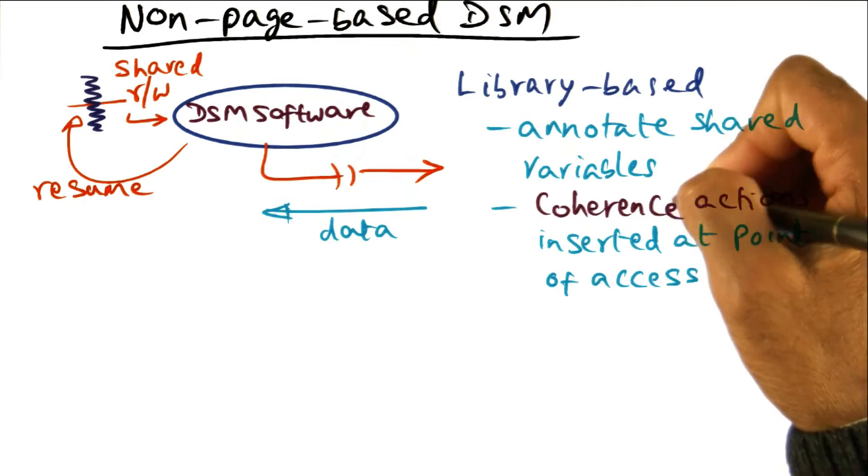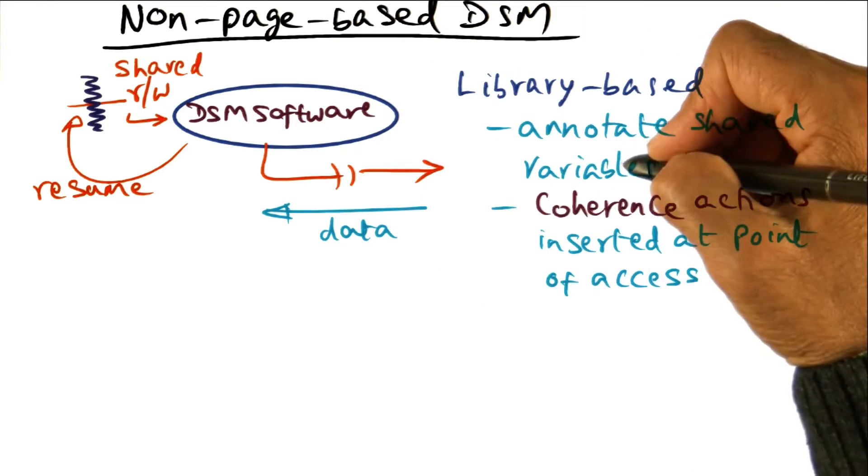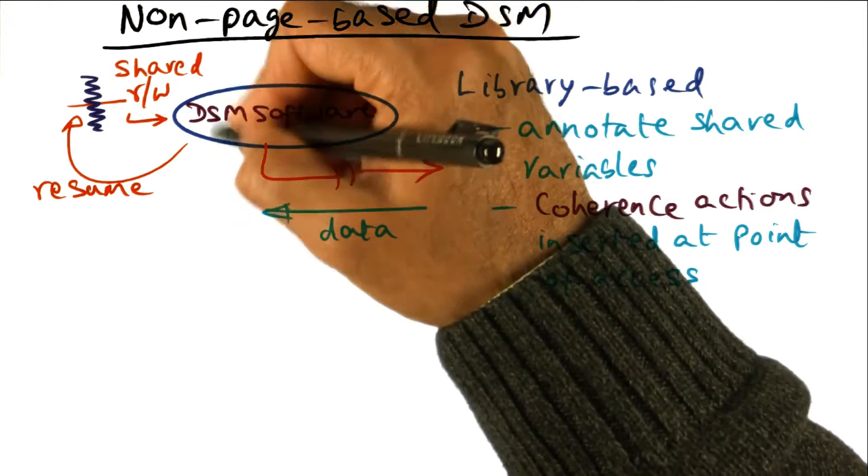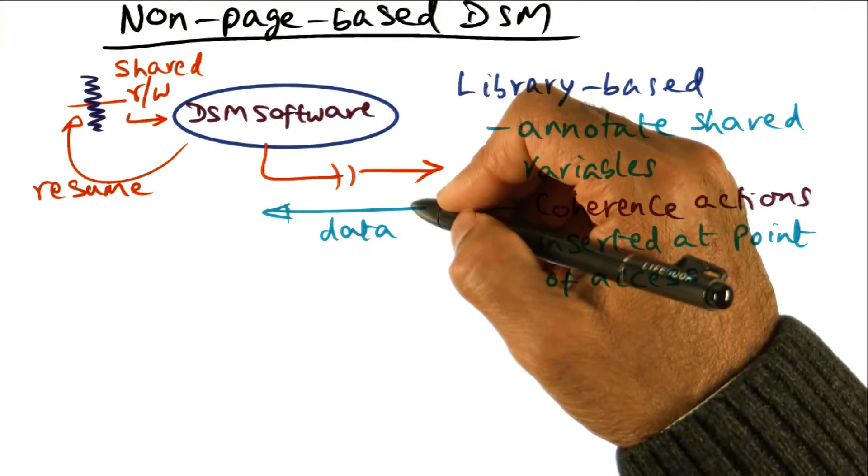So once the DSM software takes the coherence action, which might include fetching the data that is associated with the variable that you're trying to access, then the DSM software can resume this thread that caused that trap in the first place.